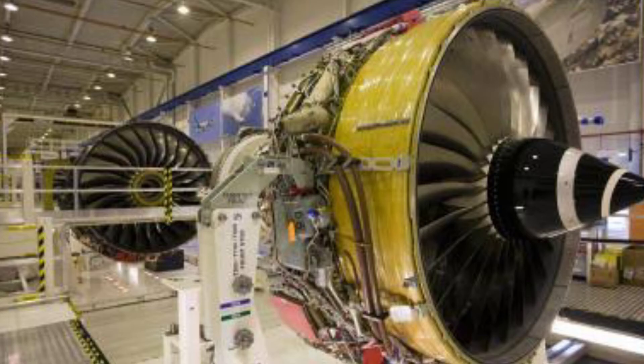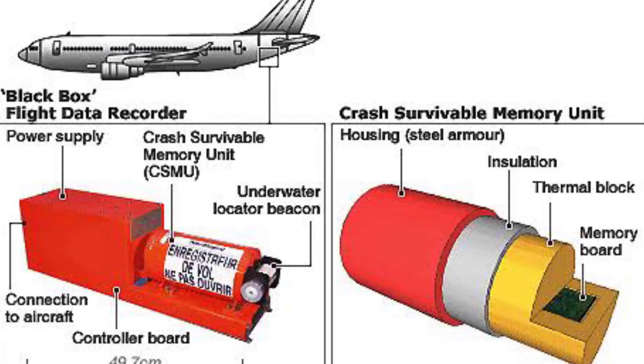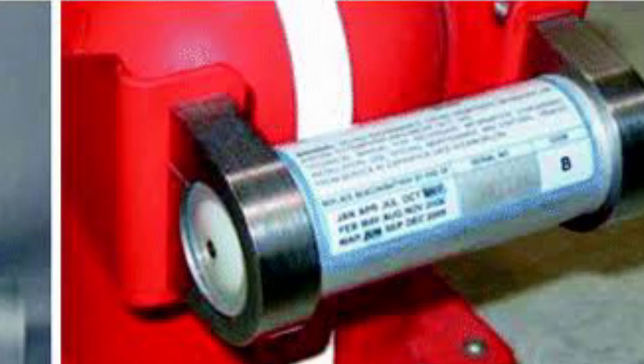I hope you have understood the work of CVR and FDR. The CVR consists of 3 printed wiring assemblies, a crash survival memory unit, and an underwater locator device — also referred to as an underwater acoustic beacon.